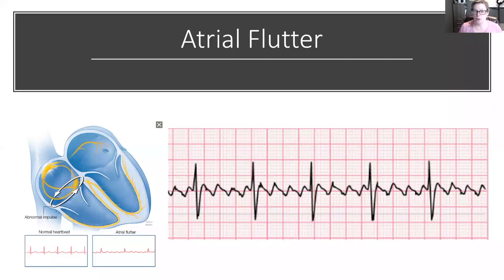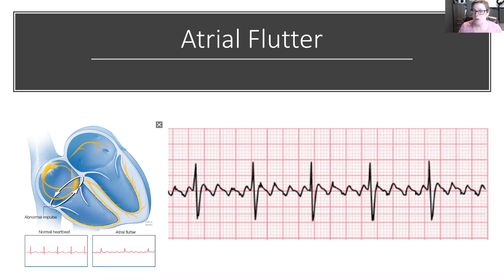With atrial flutter, we have another re-entry pattern happening here, where there's only one area of irritation — which is very different than atrial fibrillation, where there were multiple areas of irritation. So you will see the difference with atrial flutter is that we will have a consistent pattern of those P waves, and we call these F waves. We see those here; they have the same shape or similar shape throughout.